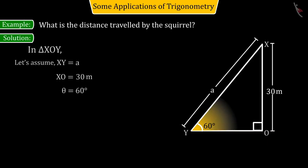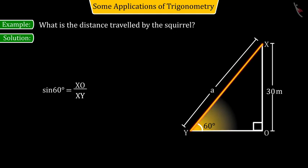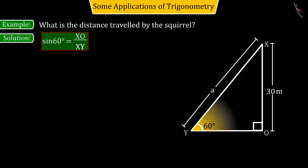Here, from the obtained figure, we get the ratio of the side opposite to the theta angle and the hypotenuse, giving us sine 60 degrees equals XO divided by XY.